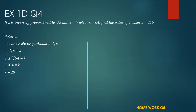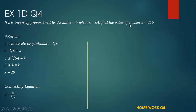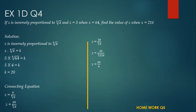Now we are going to make a connecting equation with respect to z, because we have to find the value of z. So z will be k upon the cube root of x. Since k is 20 and x is 216, z will be 20 upon 6, because the cube root of 216 is 6 — 6 times 6 times 6 is 216 — which gives 3.33.